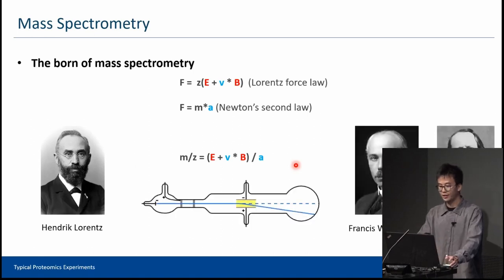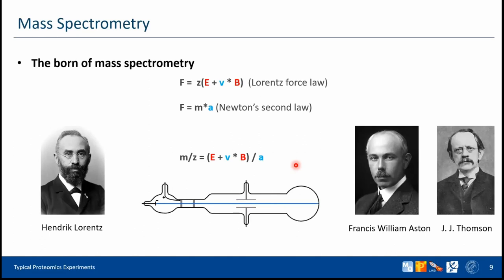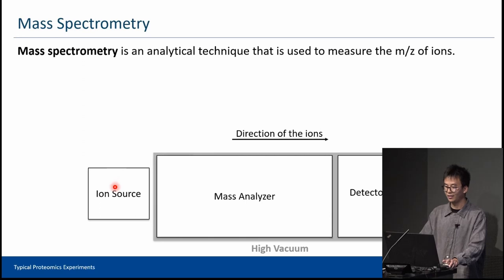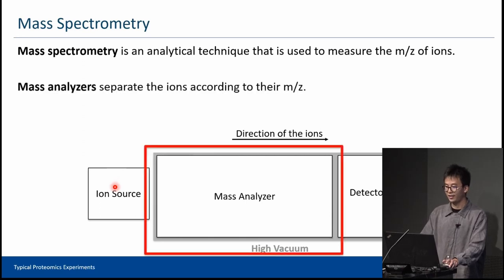Based on this equation, Francis Williams Aston and J.J. Thompson invented the very first mass spectrometer. From this equation, you can also see why we're talking about M over Z all the time in proteomics instead of just mass or charge. Mass spectrometry is an analytical technique used to measure M over Z of ions. First, the peptide solution from HPLC is ionized and becomes gas phase in the ion source, then it goes to the key part: the mass analyzer.